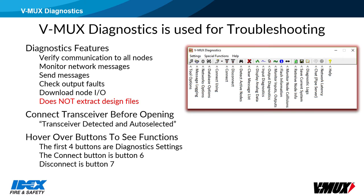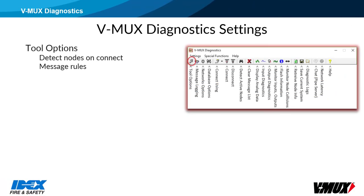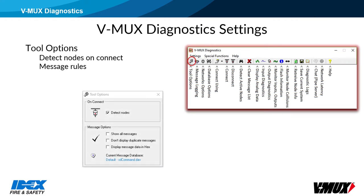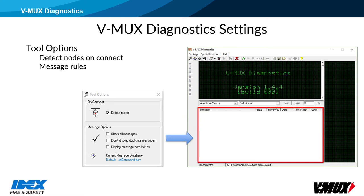The first four buttons are for diagnostic settings. Connect is button 6, and disconnect is button 7. In tool options, detect nodes on connect should be checked — this allows diagnostics to ping nodes when connected. The message options are rules on how messages will be displayed in the lower message window. Show all messages will include analog messages, such as system voltage. Don't display duplicate messages will keep a command on a single line and increment the count column each time the message gets sent. Display data in hex is checked to show hex values instead of decimal in the data column.